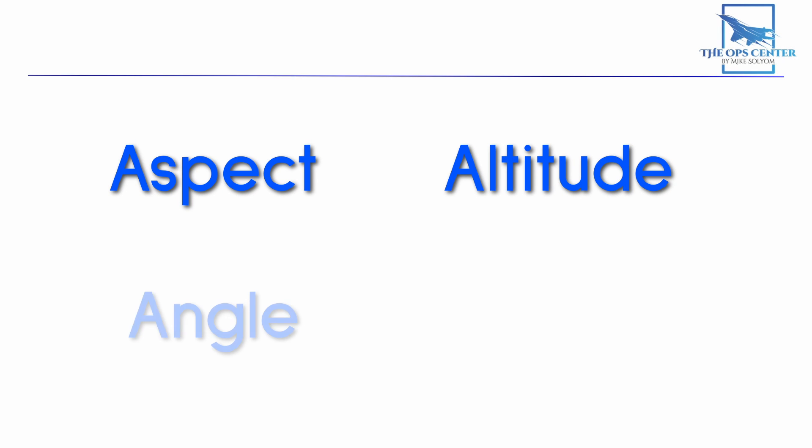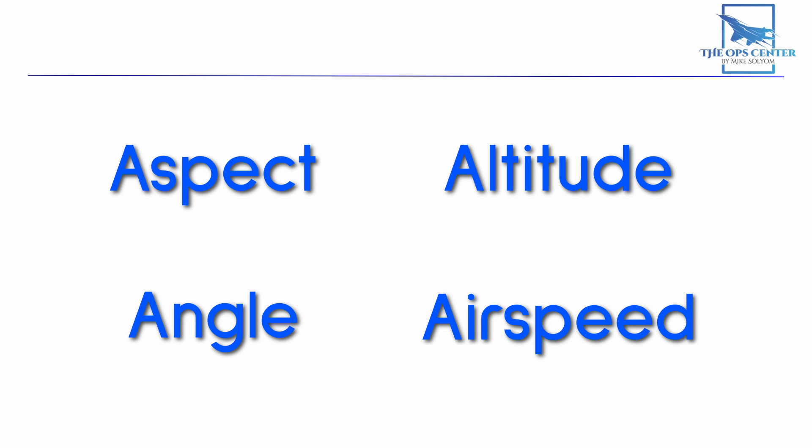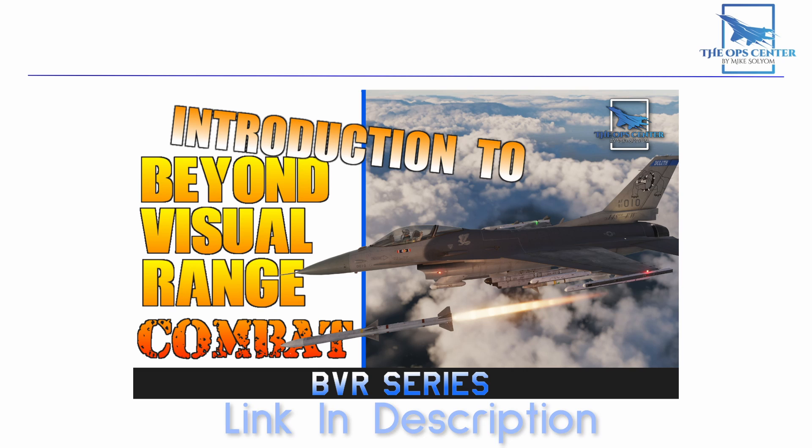There are four factors that affect the missile's performance that I call the four A's: Aspect, Altitude, Angle, and Airspeed. We touched on these in an earlier video in this series. In this video, we'll talk about how to maximize these values. But first, I want to take a moment to go over some of the terminology we'll be using.